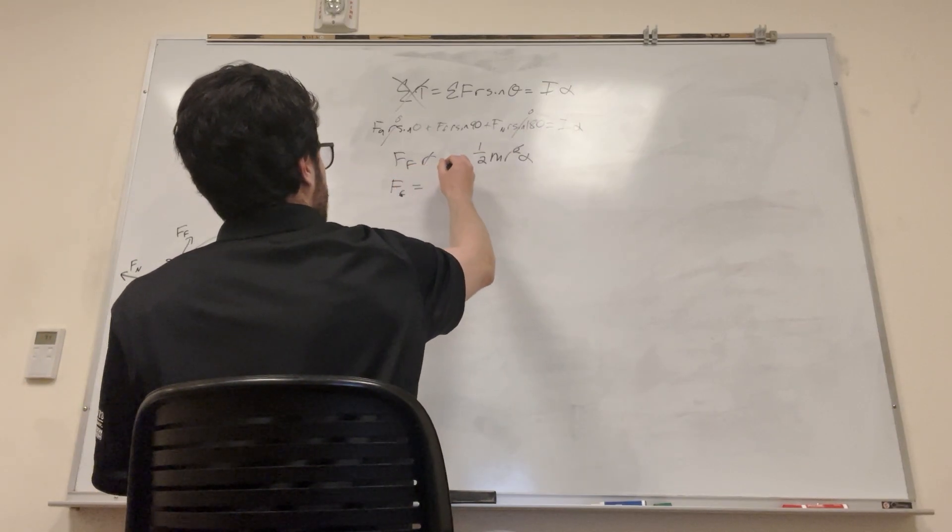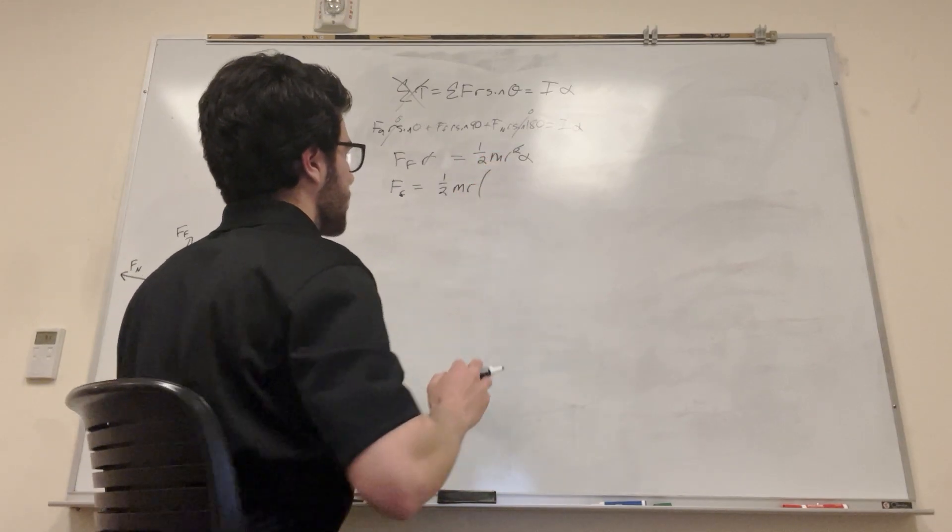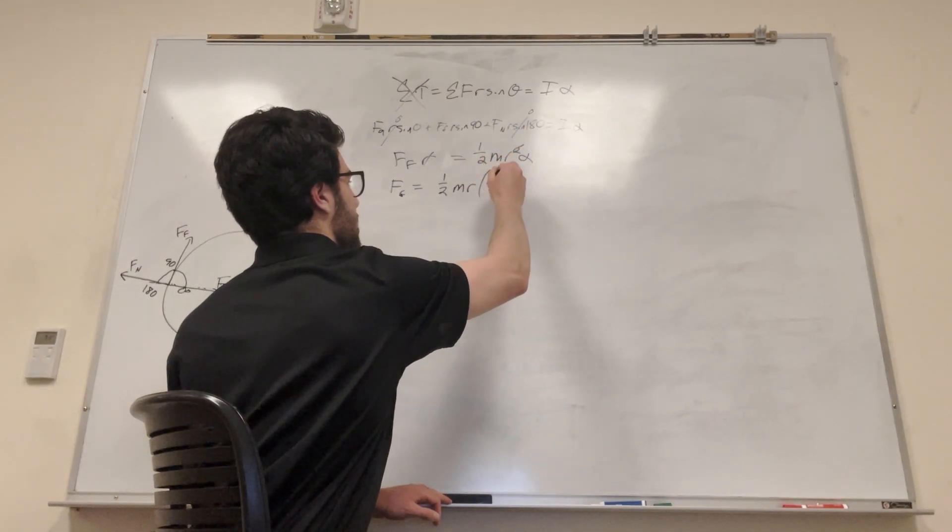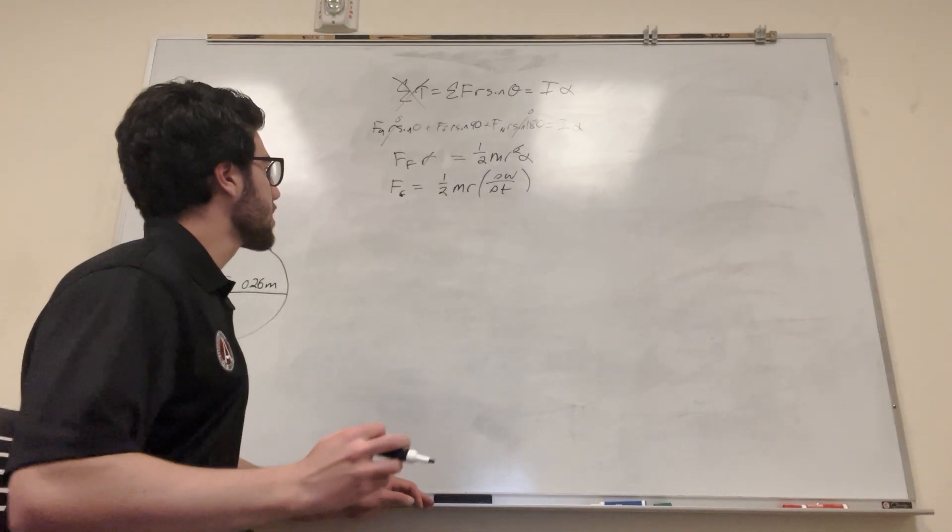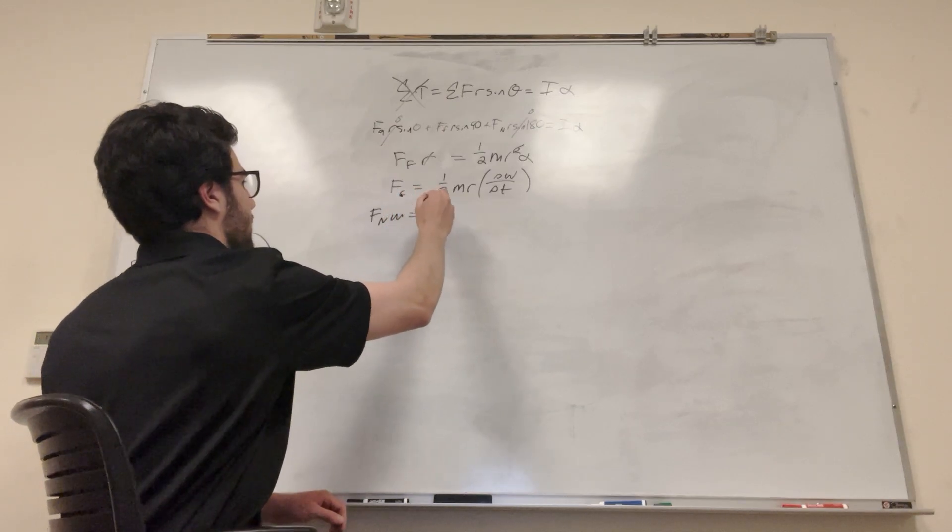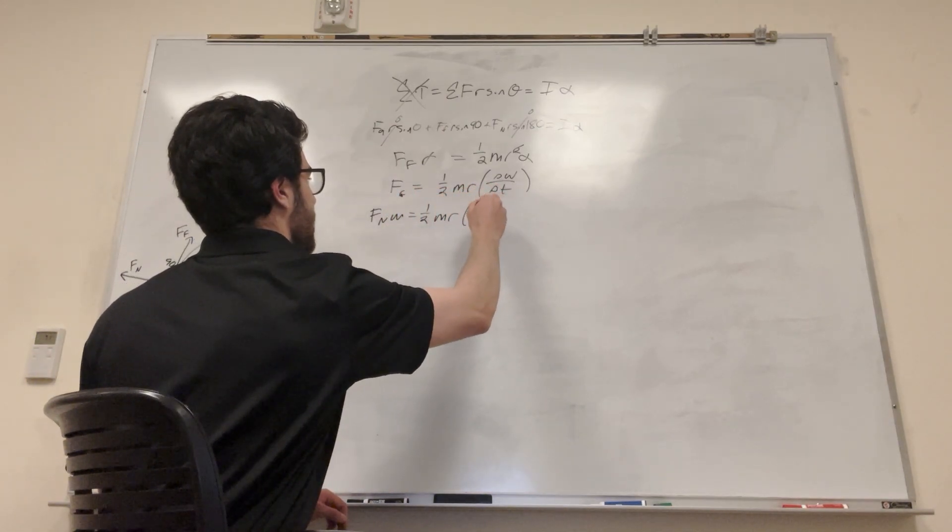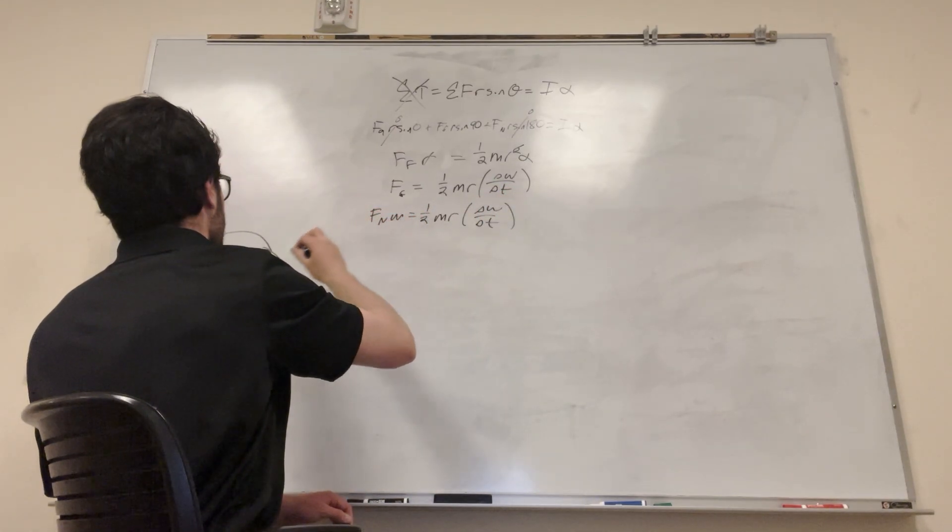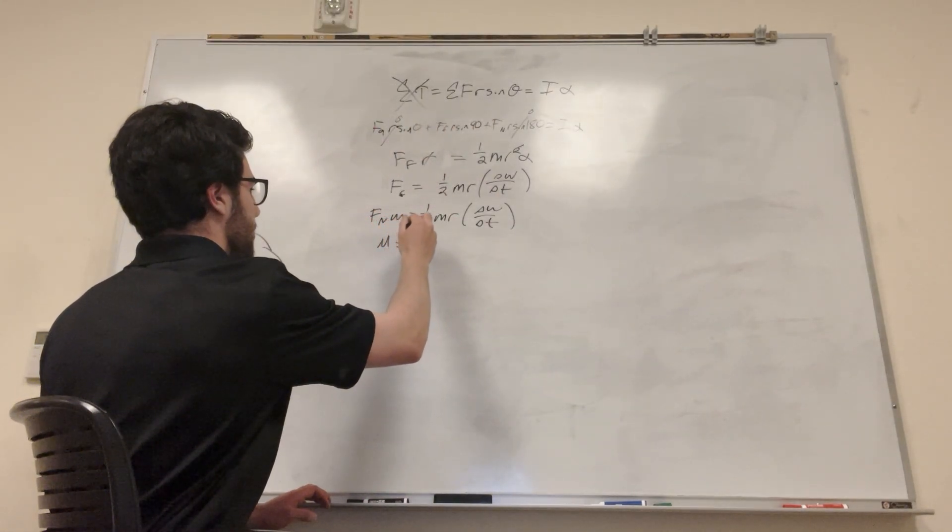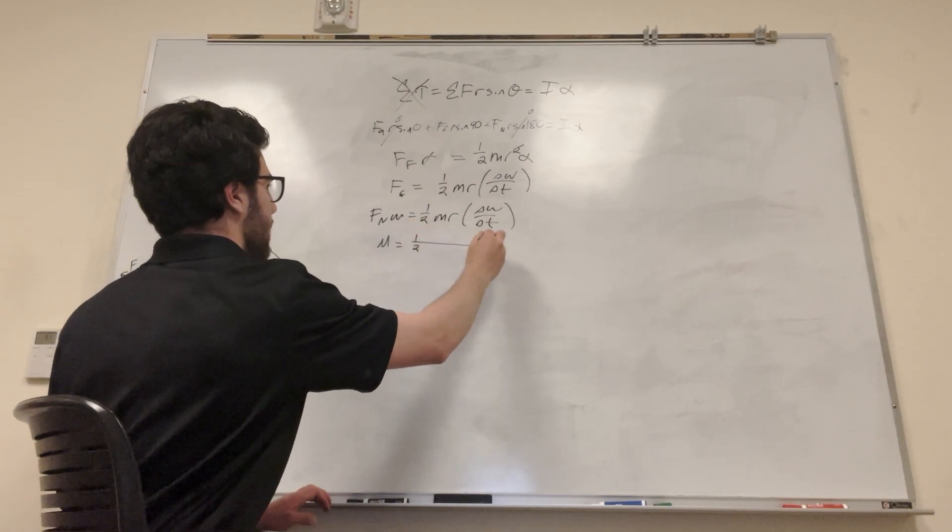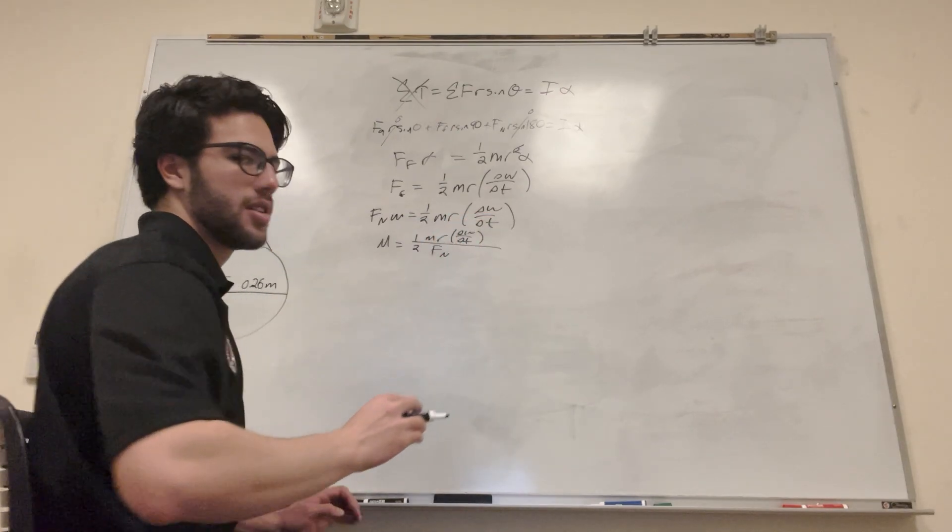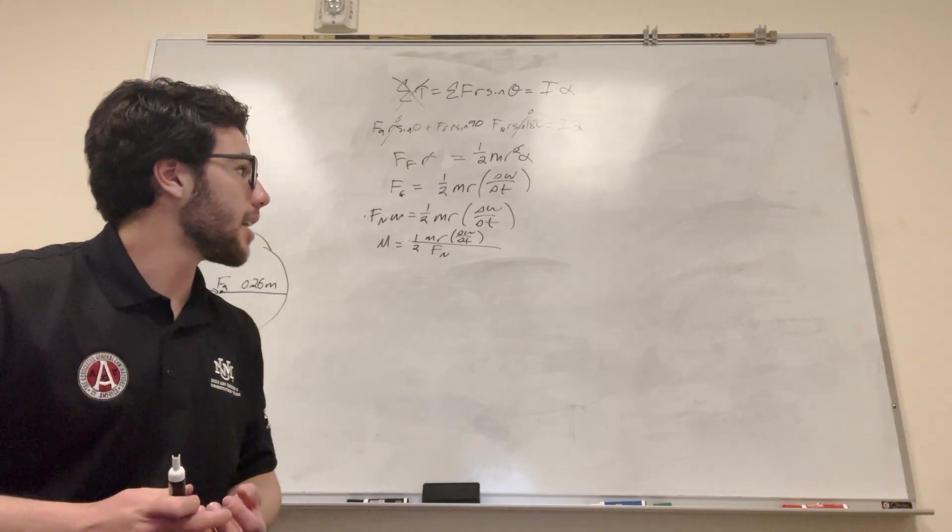So force friction equals one half mass radius. And then I'm going to write this angular acceleration as change of velocity over change in time. Angular acceleration is change in angular velocity over change in time. So now we can expand force of friction is force normal times the coefficient of friction equals one half mass radius change in omega over change in time. Then we can just divide by force normal which we know. We get coefficient of friction equals one half mass radius change in omega over change in time divided by force normal. Okay, so quickly I want to notice that I did a little something wrong.